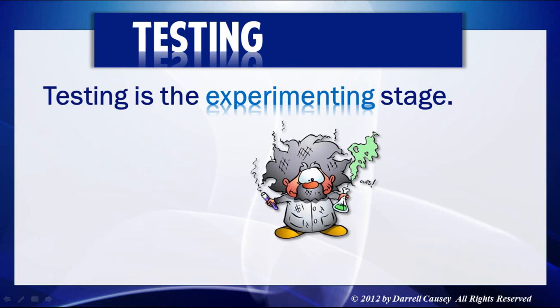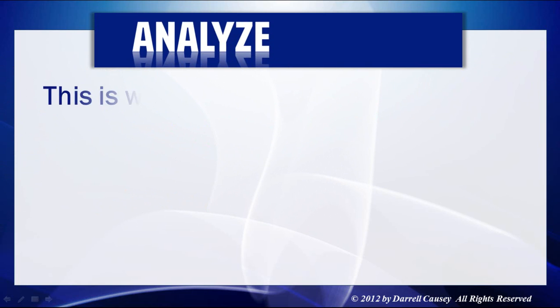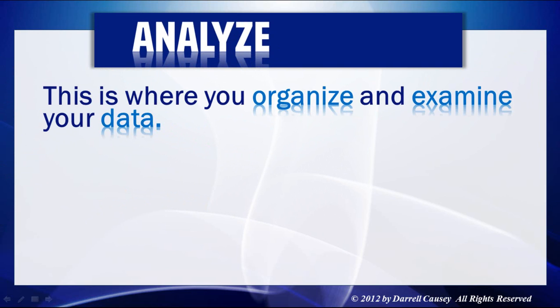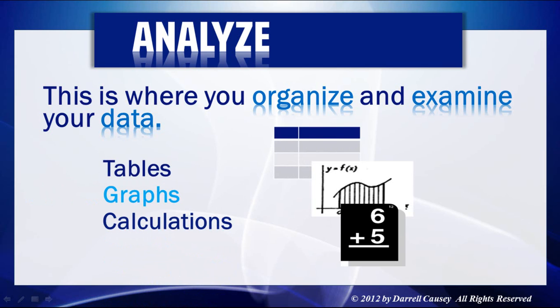You take your hypothesis and you test it. Testing is the experimenting stage — to me, this is the fun stage. This is where you design an experiment and you prove or disprove your hypothesis. Then you collect data, organize it, and examine it through tables, charts, graphs, and calculations. When you analyze your data, you come up with a conclusion.